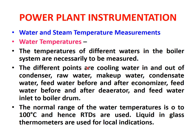Next is water temperature measurement. The temperatures of different waters in the boiler system must be measured. Water in the steam power plant is used at many points — raw water, condensate water, blowdown water, and makeup water. The key measurement points include cooling water in and out of the condenser, raw water, makeup water, condensate water, feed water before and after the economizer, feed water before and after the de-aerator, and feed water inlet to the boiler drum. The normal range of water temperatures is 0 to 100 degrees Celsius, so Resistance Temperature Detectors (RTDs) and liquid-in-glass thermometers are used for local indication.